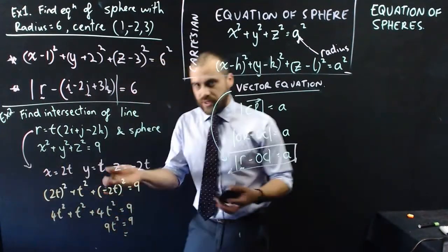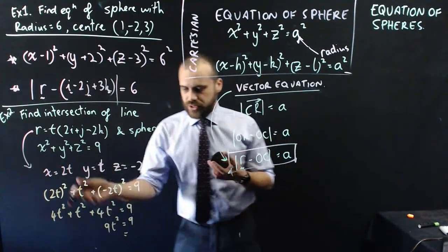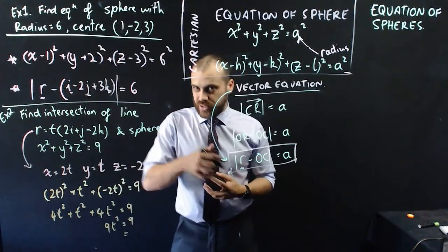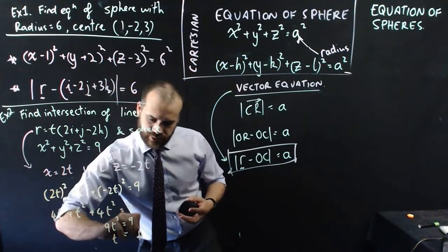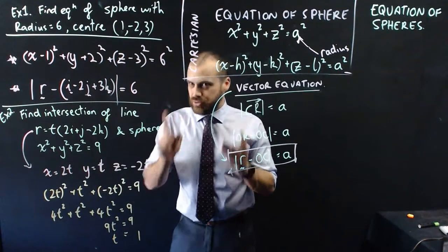Solving that, I'm just going to jump through this. 9 divided by 9 is 1. t squared equals 1, so t equals 1. But, plus or minus.